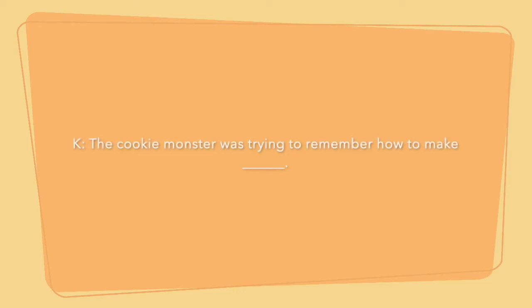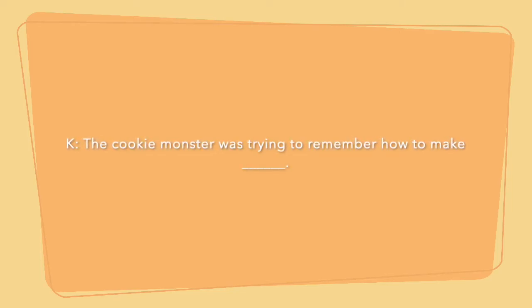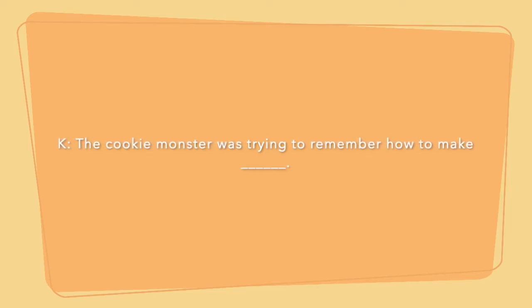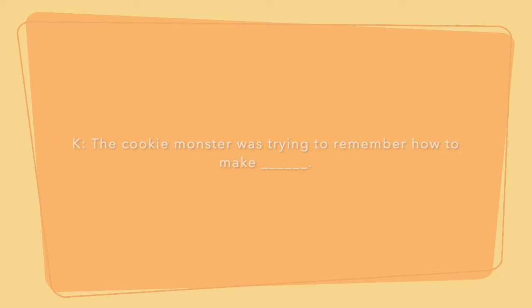We just got done watching a video about the Cookie Monster. Scholars, what was the Cookie Monster trying to do in that video? That's what we're going to be writing about today. So Kindergarten, here is your slide with your prompt on it. Copy the sentence and fill in the blank. The sentence is: The Cookie Monster was trying to remember how to make ___. Copy the sentence and fill in the blank.